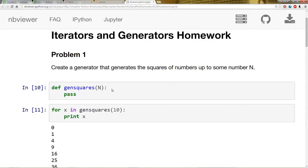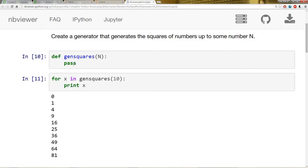So fill this generator equation here, or this function, excuse me, and pass. Remember, it should use some sort of yield statement.